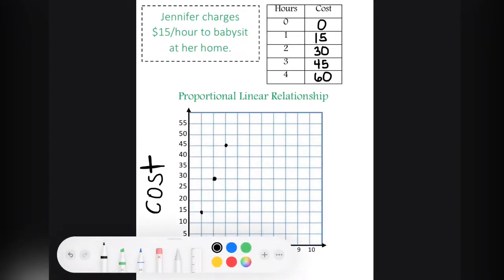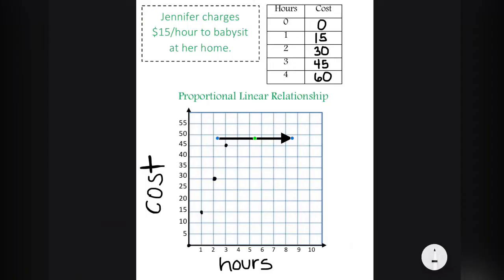Now we could keep plotting points, but because the situation is linear, we can just go ahead and create a straight line. We will start at 0,0, going through each one of our points and extending out our line. When it's extended, you'll actually see that it will cross through four hours and $60.